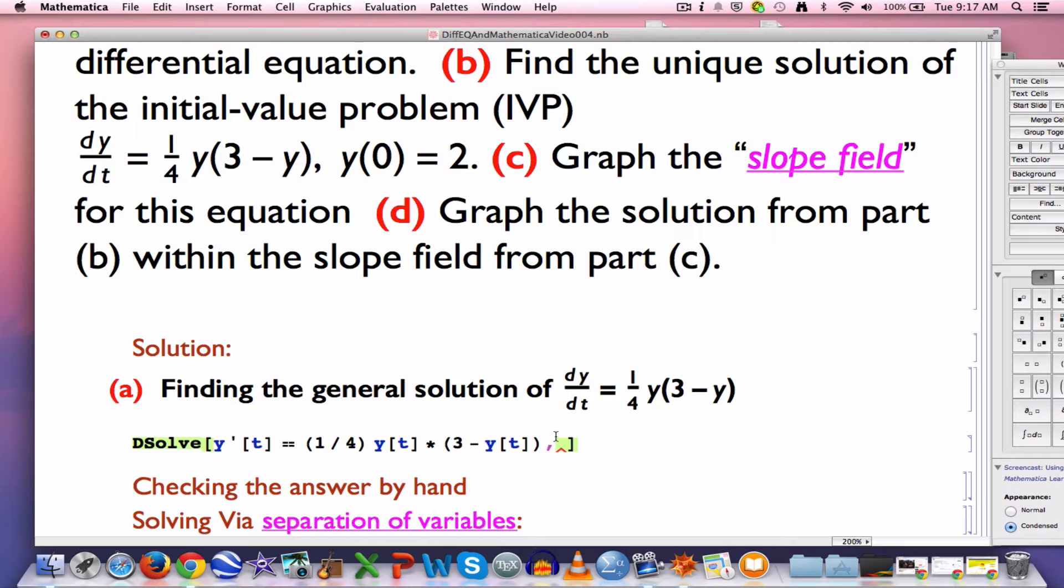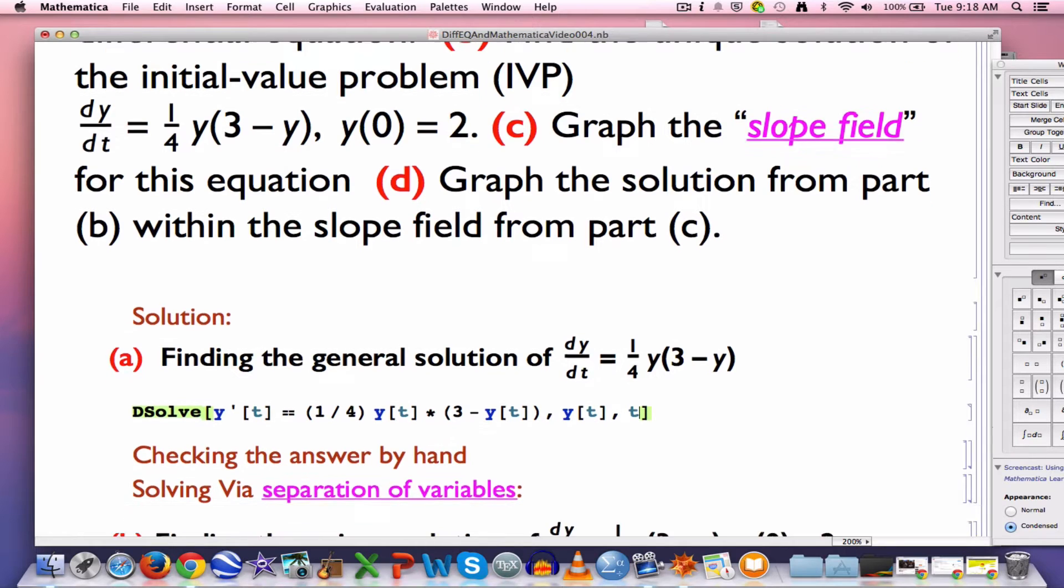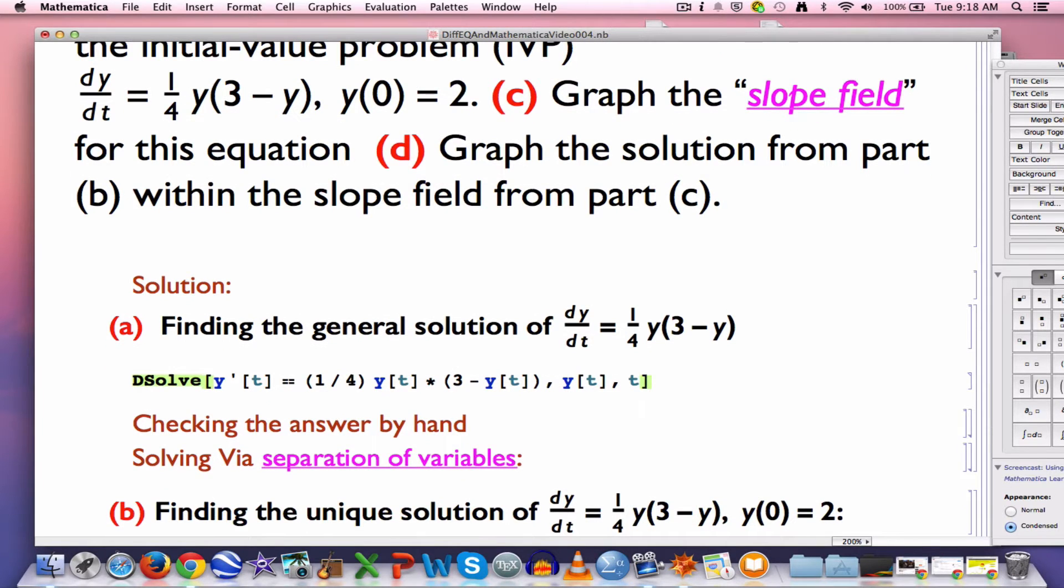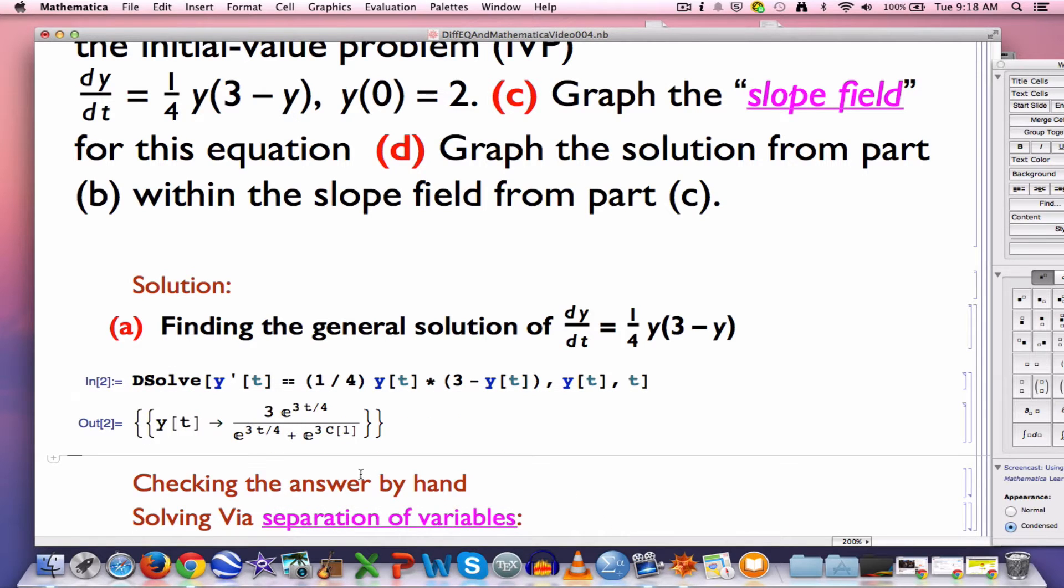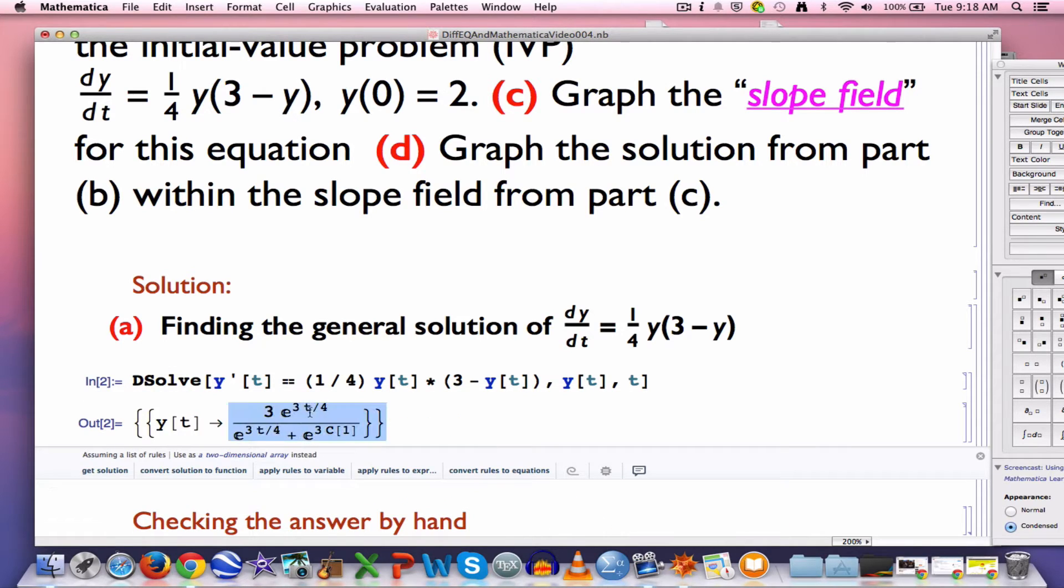Then you put a comma, and the second input reemphasizes that y is the function that you're trying to solve for as a function of t. Then you put a comma and put t, once again, to emphasize that t is the independent variable. A little strange, but that's how it goes. Enter this with shift return. What do we get? We get this function right here.